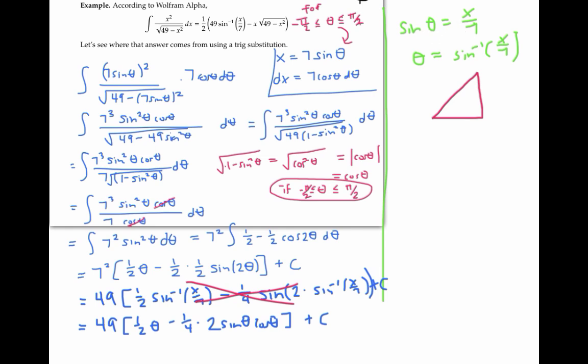So since sine theta is x over seven, if I label one of my angles as theta, then the opposite side needs to have a measure of x, and the hypotenuse should have a measure of seven. You can check that by the Pythagorean theorem, that means that this bottom side needs to have a measure of the square root of 49 minus x squared.